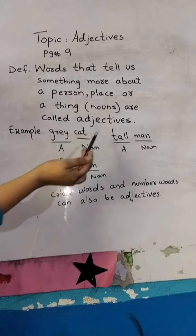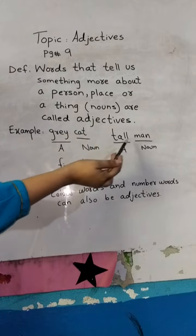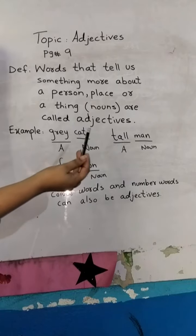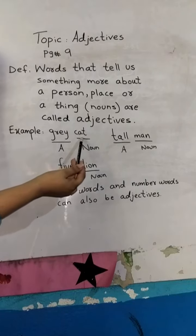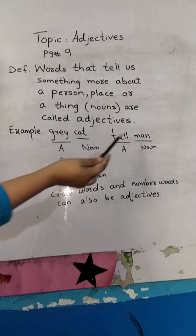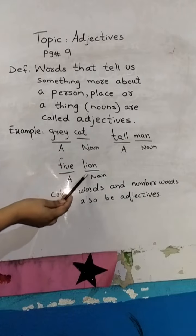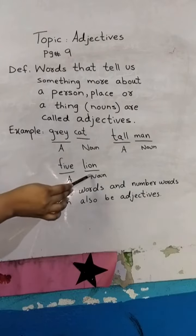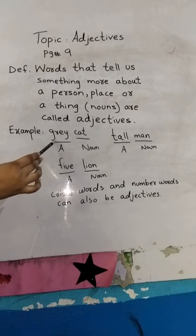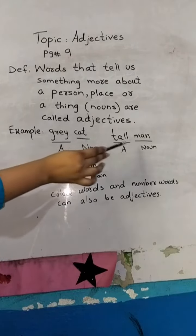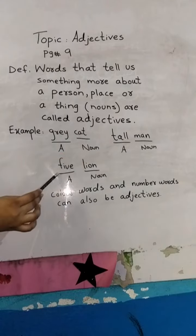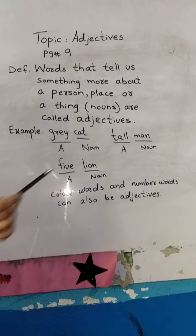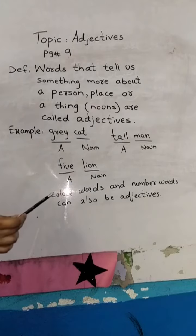For example: grey cat, tall man, five lines. The words cat, man, and line are nouns. But the words grey, tall, and five are adjectives.